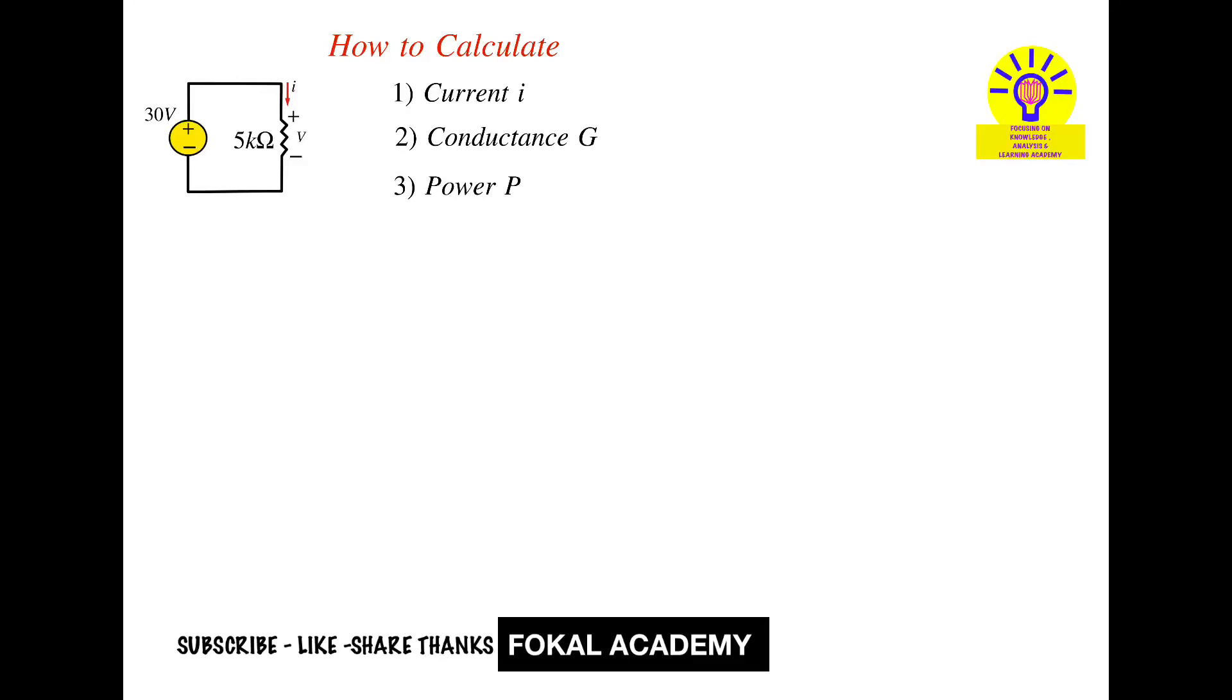Hi everyone, welcome to Focal Academy. In this problem, a circuit is given with one voltage source and one resistor. The voltage source is 30 volts and the resistor is 5 kilo ohms.